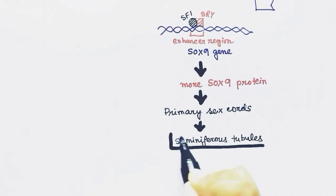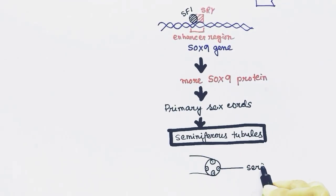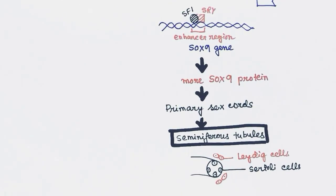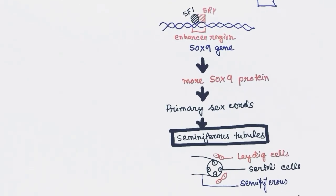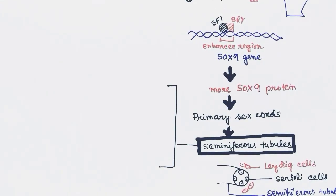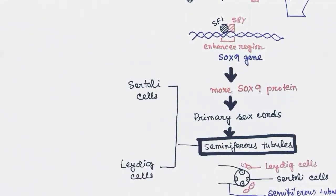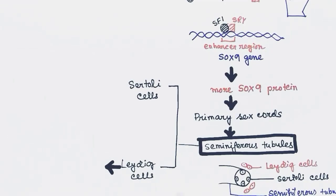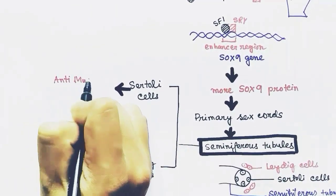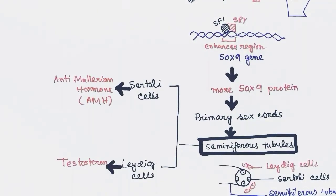Seminiferous tubules have two types of cells: Leydig cells and Sertoli cells. These two cell types will produce different hormones that help in the formation of male reproductive organs. The Leydig cells will produce testosterone, and the Sertoli cells will produce AMH, that is anti-Müllerian hormone.